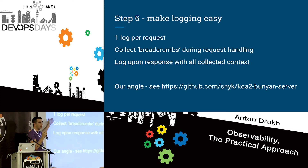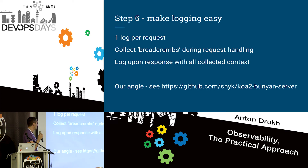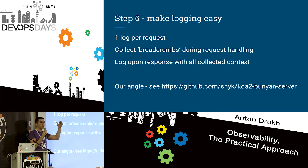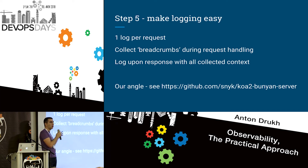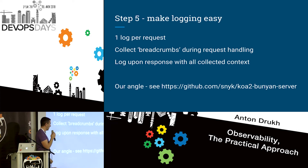One log per request is a great place to start, but you want to log everything. Usually people say, 'I'll just log an exception in my catch block.' But logging each and every request allows a lot of visibility into what's really happening. If I'm logging just once per request, what do I do along the handling? Just collect the breadcrumbs — carry a log context object that you add keys to each time you encounter an important event in the processing of your request, then push it to stdout upon response.